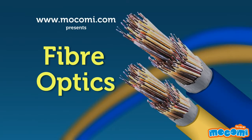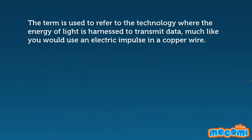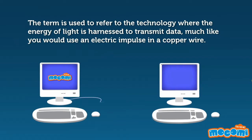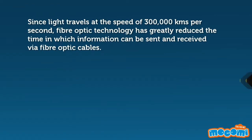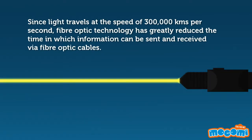What are fibre optics? The term is used to refer to the technology where the energy of light is harnessed to transmit data, much like you would use an electric impulse in a copper wire. Since light travels at the speed of 300,000 km per second, fibre optic technology has greatly reduced the time in which information can be sent and received via fibre optic cables.